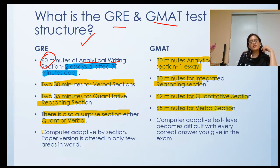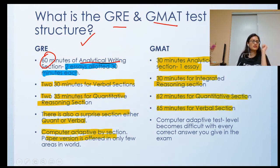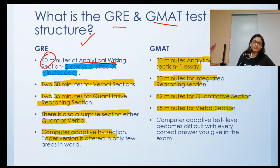GRE is a computer adaptive test by section, and a paper version is offered in very few places — literally one or two places in the world. GMAT is also a computer adaptive test, meaning the level becomes more difficult with every correct answer you give in the exam.